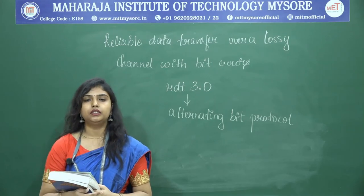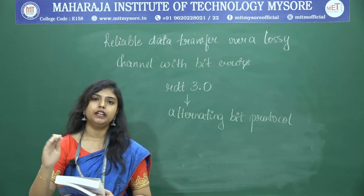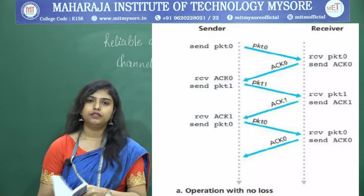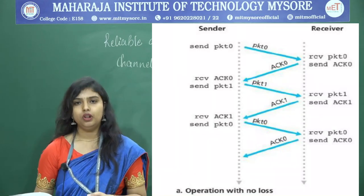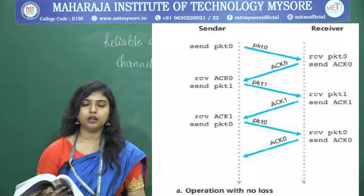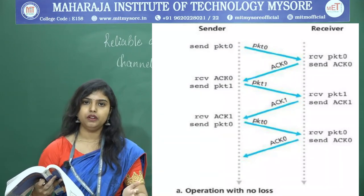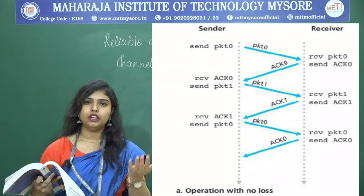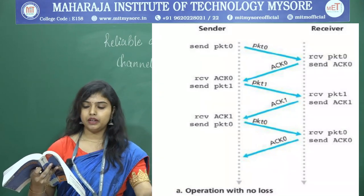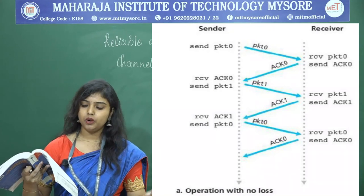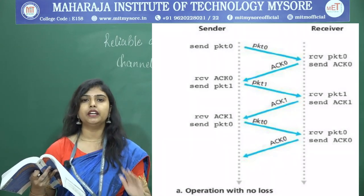They have also considered four cases of how RDT 3.0 responds. The first case is operation with no loss: no packet loss and no packet corruption. The sender sends packet 0, the receiver receives it and sends acknowledgement 0. When the sender receives acknowledgement 0, it sends packet 1. The receiver sends acknowledgement 1. The sender then sends packet 0 again — perfectly reliable data transfer.